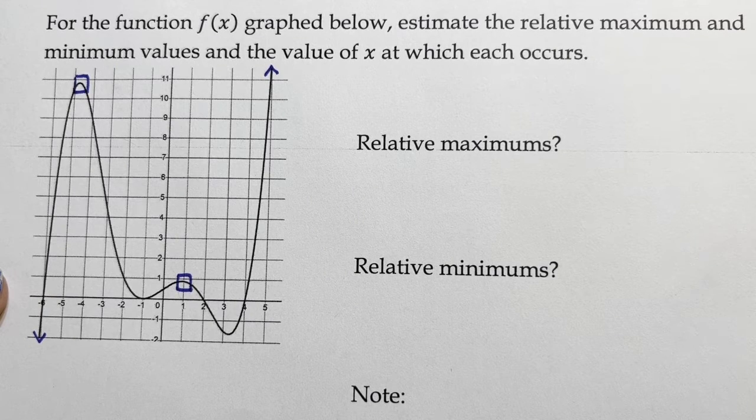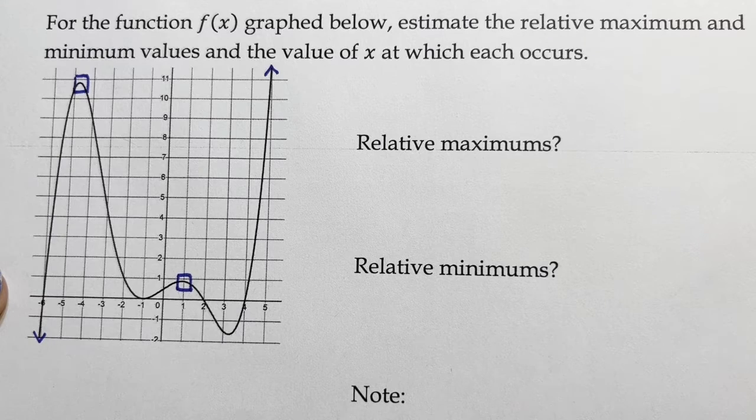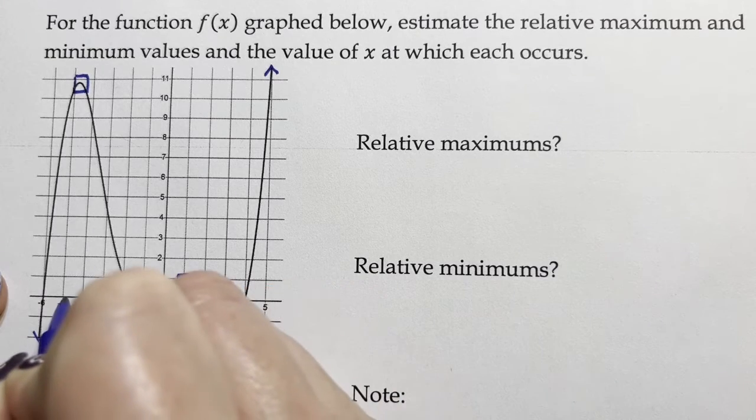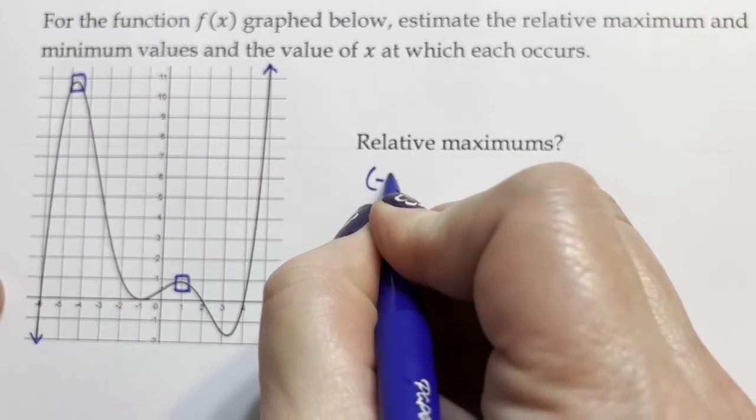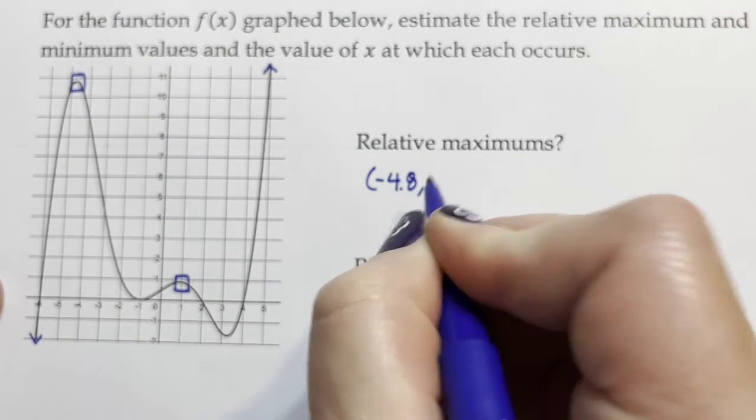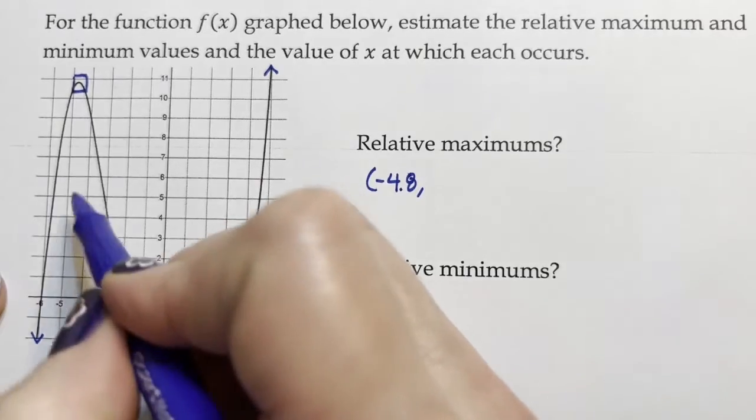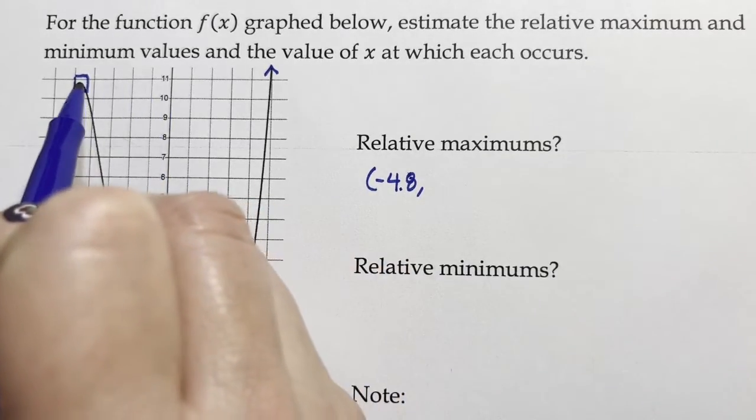Just right there, if we kind of focus in here and we look, this is like negative 4.8-ish—that's the x-value. And then the maximum value is about 10.8.